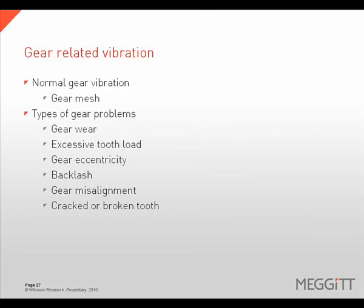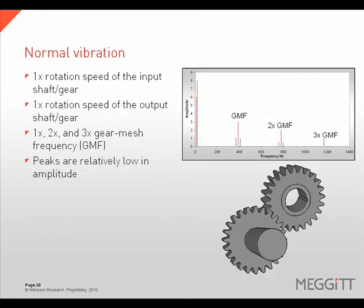Any gear set will generate a vibration response — gear-related vibration can be normal, or it can indicate problems such as gear wear, gear misalignment, or cracked or broken teeth. It is normal for a gear set to generate vibration at its gear mesh frequency and its harmonics; 1 times, 2 times, and 3 times gear mesh frequency are all normal, but they should be at relatively low amplitudes.